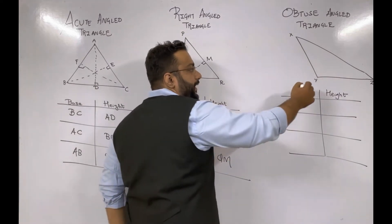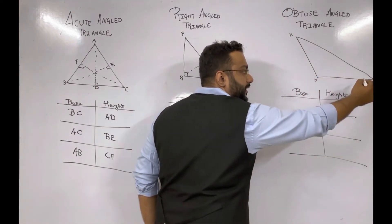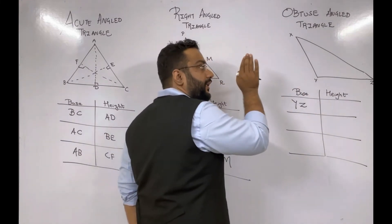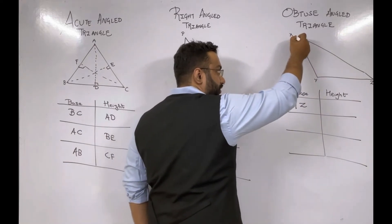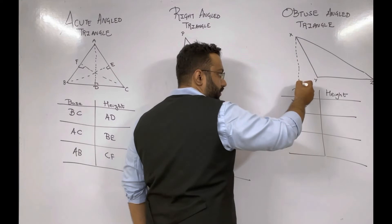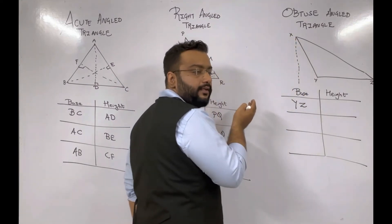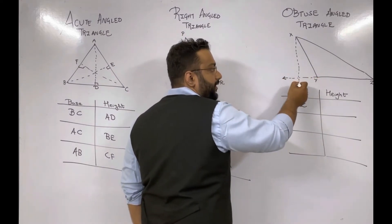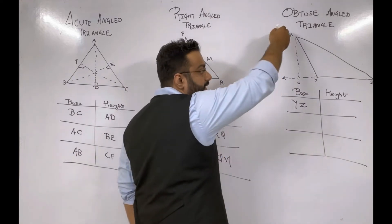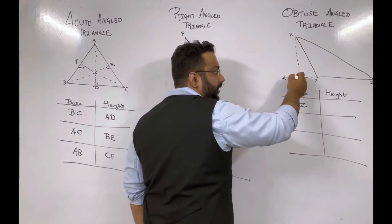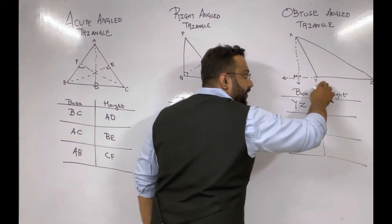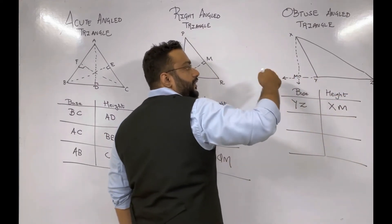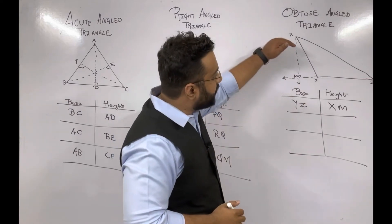In the obtuse angle triangle, if I take base as YZ, the height will start from its opposite vertex X. Here we need to extend the base because the perpendicular from X falls outside the triangle. So in an obtuse angle triangle, always remember: you need to extend the base, and the height starts from the opposite vertex. We name the foot M, so for base YZ the corresponding height is XM.